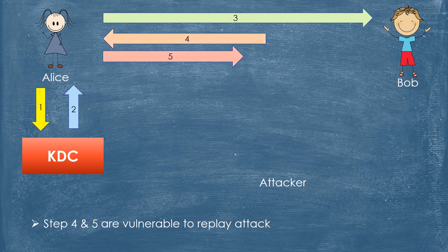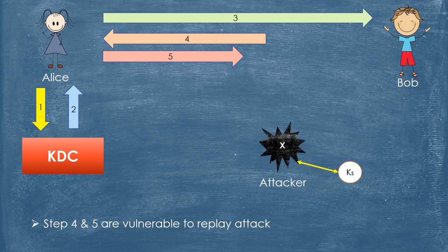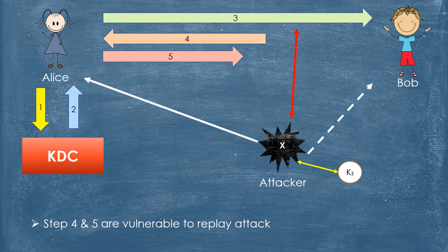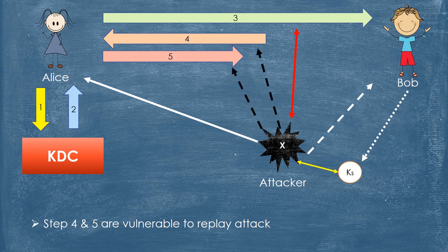Steps 4 and 5 are vulnerable to replay attack. An opponent X (attacker) has compromised an old Session Key. X has observed and recorded Step 3, and can then impersonate Alice and trick Bob into using the old key by replaying Step 3. If X can intercept the handshake message in Step 4, it can impersonate Alice's response in Step 5, and send false messages to Bob, which Bob thinks come from Alice using an authenticated Session Key.